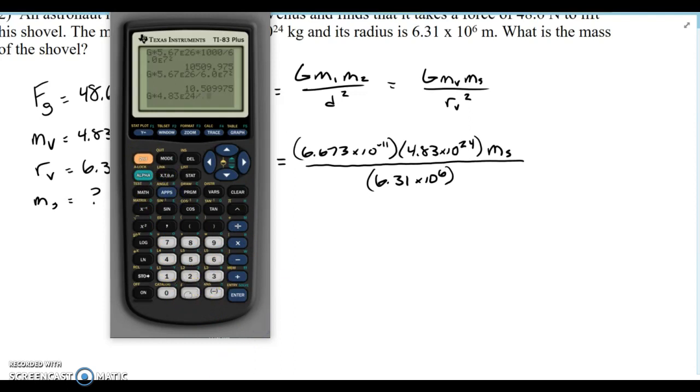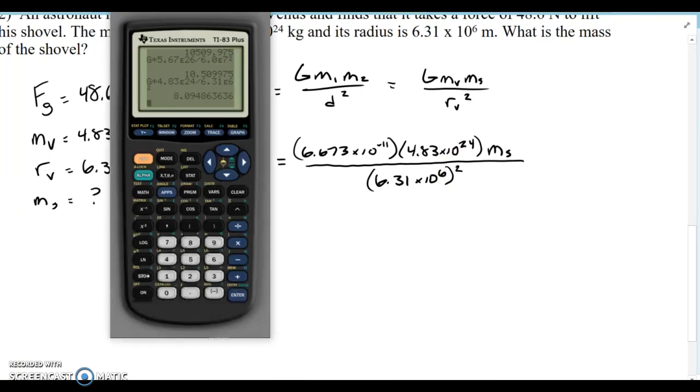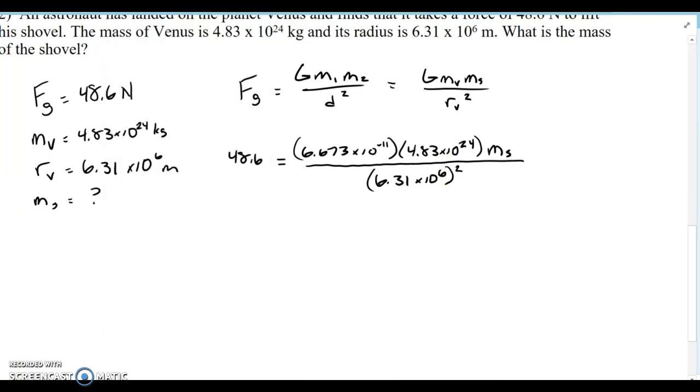And divided by 6.31, E to the 6—and that needs to be squared. That should be squared right there. And I got 8.095 as the coefficient to the mass of the shovel.